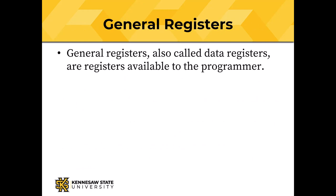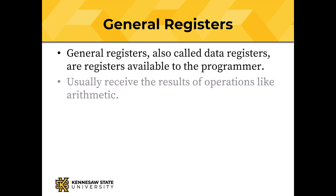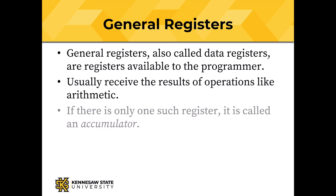Let's review that with a little more detail. General registers, also called data registers, are the registers available to the programmer. They receive the results of operations like arithmetic. If there's only one register, it's called an accumulator. The one register in von Neumann's original architecture was called an accumulator because it accumulated the results of arithmetic operations.